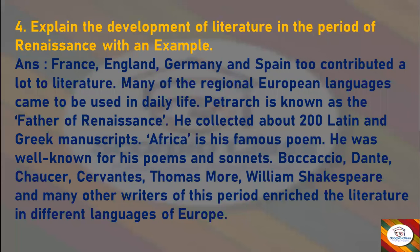Next: Explain the development of literature in the period of Renaissance with an example. Answer: France, England, Germany, and Spain also contributed a lot to literature. Many of the regional European languages came to be used in daily life. Petrarch is known as the father of Renaissance; he collected about 200 Latin and Greek manuscripts. Africa is his famous poem and he was well known for his poems and sonnets. Boccaccio, Dante, Chaucer, Cervantes, Thomas More, William Shakespeare, and many other writers of this period enriched the literature in different languages of Europe.